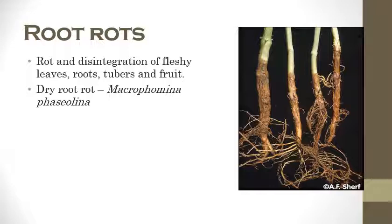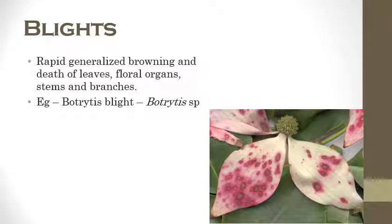The next one is blights. The name indicates 'blightening,' meaning death of leaves, floral organs, stems, and branches. Due to the rapid generalization of browning, the plant cannot perform photosynthesis and starts to die. It initially starts from leaves then extends to floral organs, stems, and branches. The best example is Botrytis blight which is caused by Botrytis species.